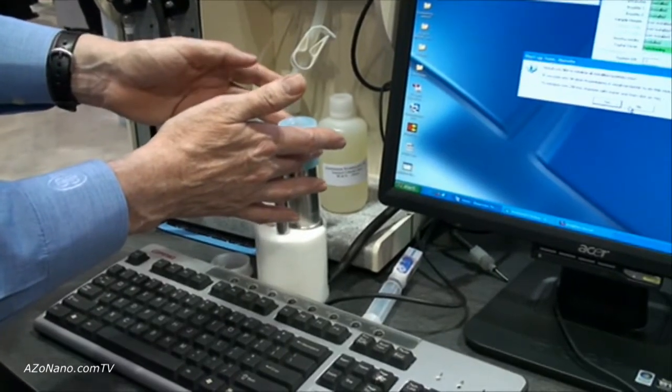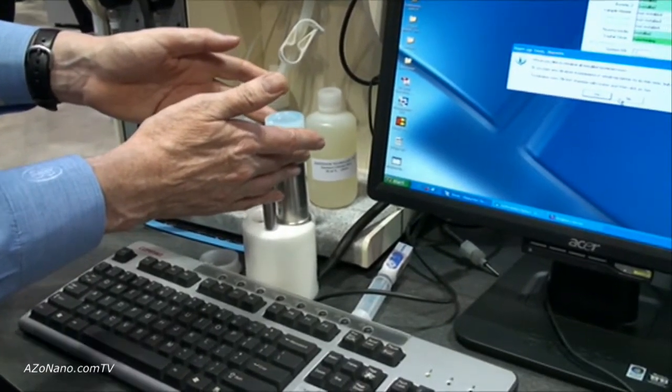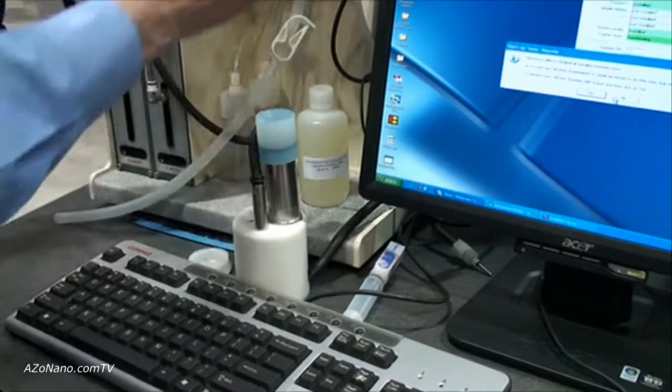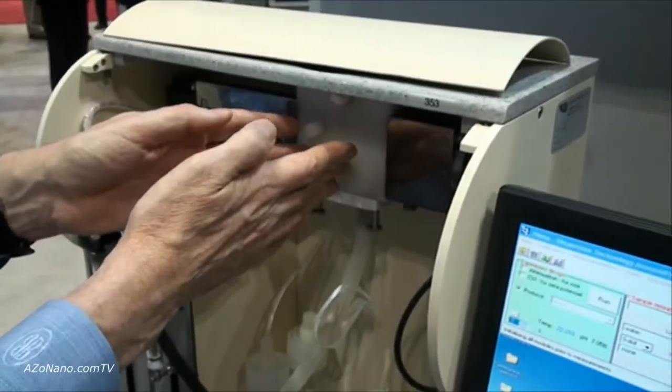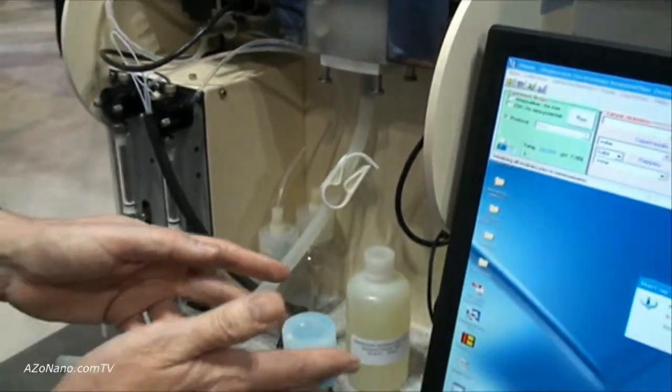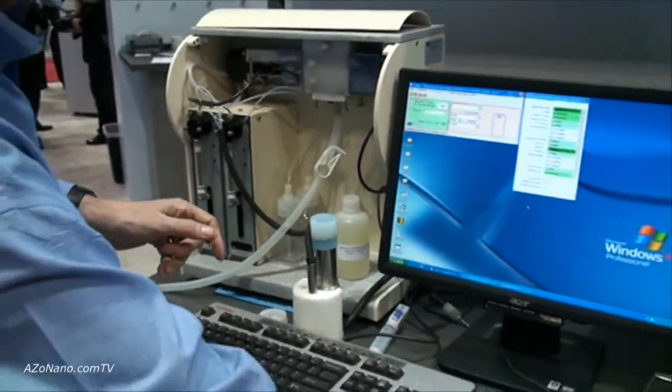All we need again here is to have the sample come in contact with the probe and it could be here as a separate measurement or mounted in the same chamber. So we measure particle size and zeta potential at the same time but as long as we're in contact with the sample we can perform a zeta potential measurement.